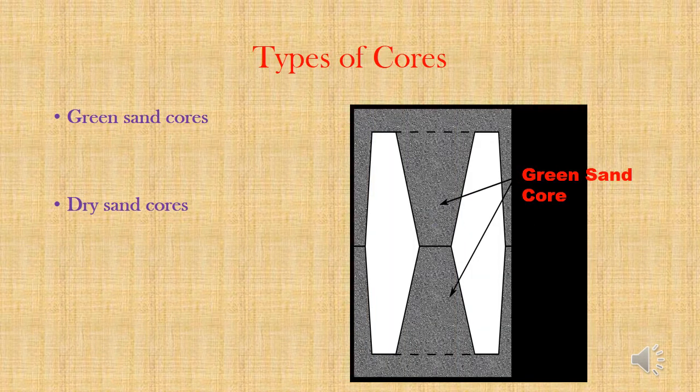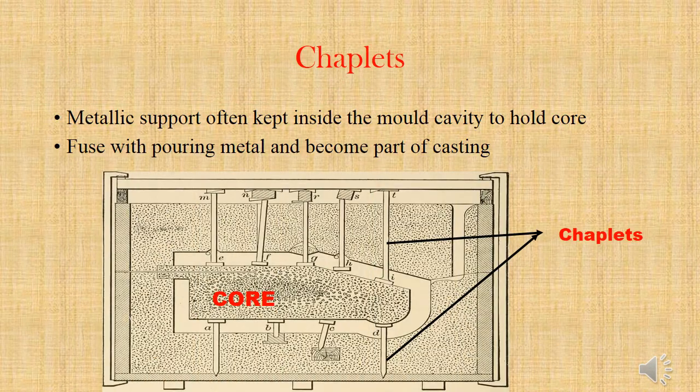Now we are seeing the types of core. If the core is of larger size, then the core will be made of green sand, similar to the molding sand, and no need to prepare the core separately. But if the core is of smaller size and it will be entirely covered with molten metal, then the core will be made of dry sand with higher refractoriness and dry strength. Chaplets are metallic supports kept inside the mold cavity to hold the core. When molten metal is poured inside the mold cavity, the chaplet will fuse with the molten metal and become part of the casting.